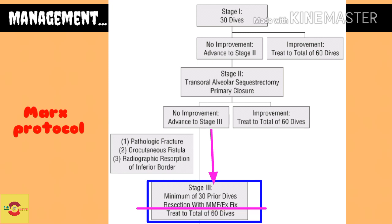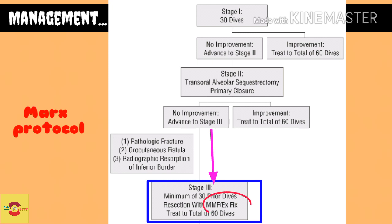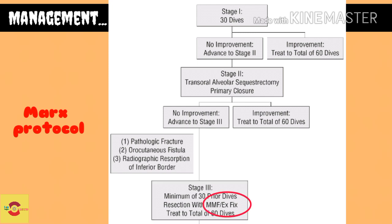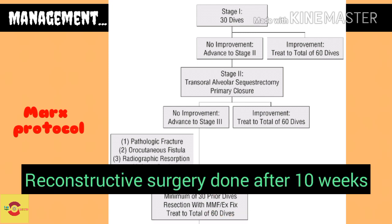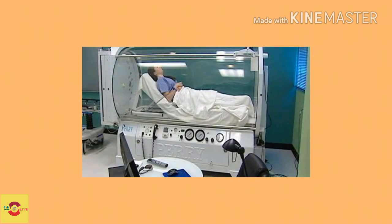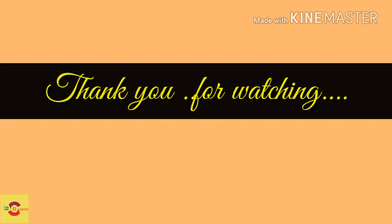In those with an orocutaneous fistula, the involved skin and fistula tract are excised, followed by closure. Stabilization of these segments is done with an external fixator. Marx proposes that reconstructive surgery should be done 10 weeks after resection, thus enabling the graft to be placed. We will see more about hyperbaric oxygen therapy in future videos.